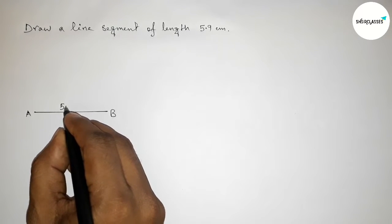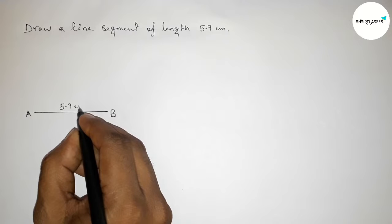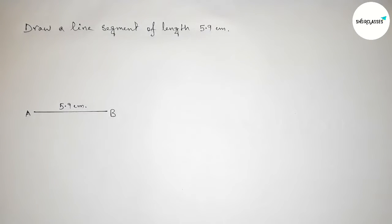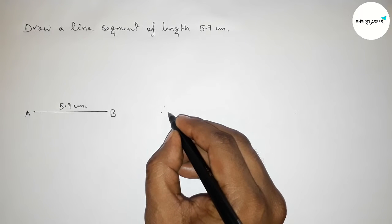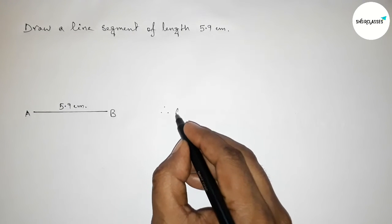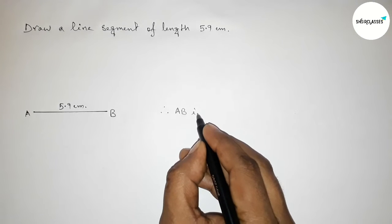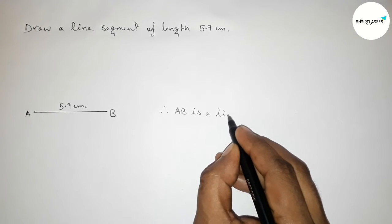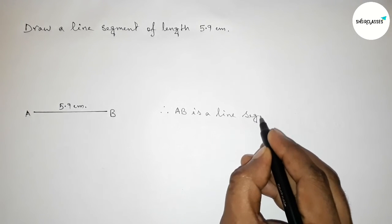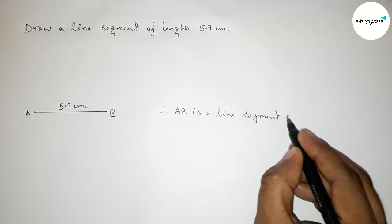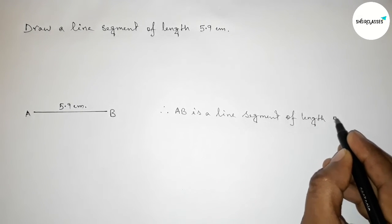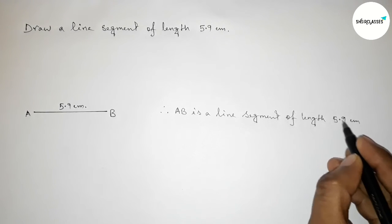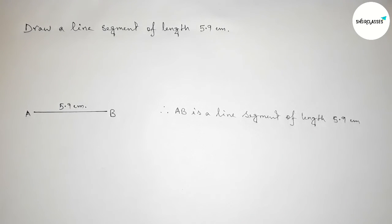equals to 5.9 centimeter line. So therefore we can say that AB is a line segment of length 5.9 centimeter. With the help of scale you can draw this line. So that's all, thanks for